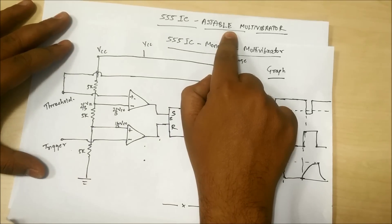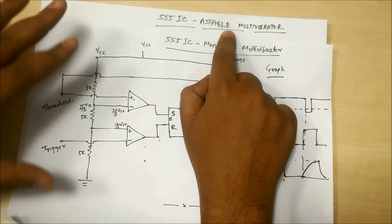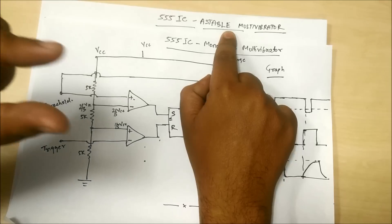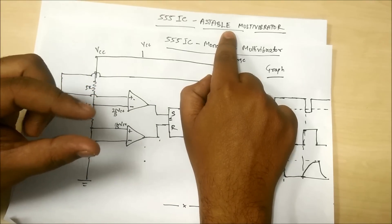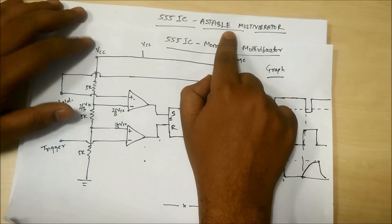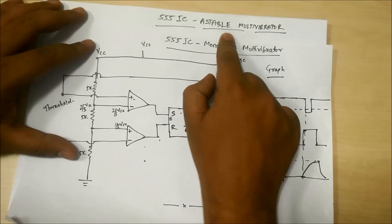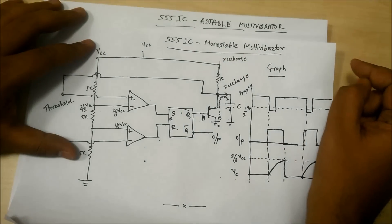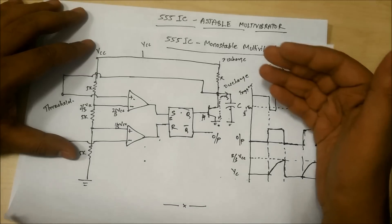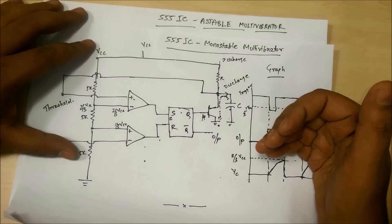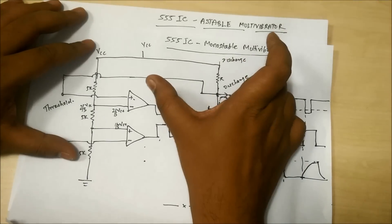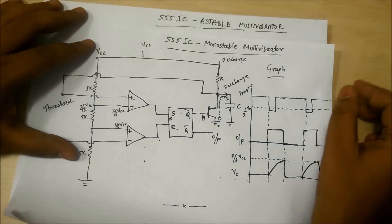In an astable multivibrator, both states are not stable. It will remain for some period of time at the low state, then transit to a high state, but it will not be stable there either. After some time it will come back to the low state — low, high, low, high — this game will continue.